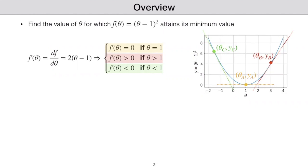Having that in mind, let's look at a very simple problem. We want to find the value of theta — we can call this anything we want, but here I use theta — for which this function f of theta equals theta minus one squared reaches its minimum value. One way to solve this problem is to plot this function using different values on this blue curve, and we can see that at theta equals one, this function reaches its minimum value.